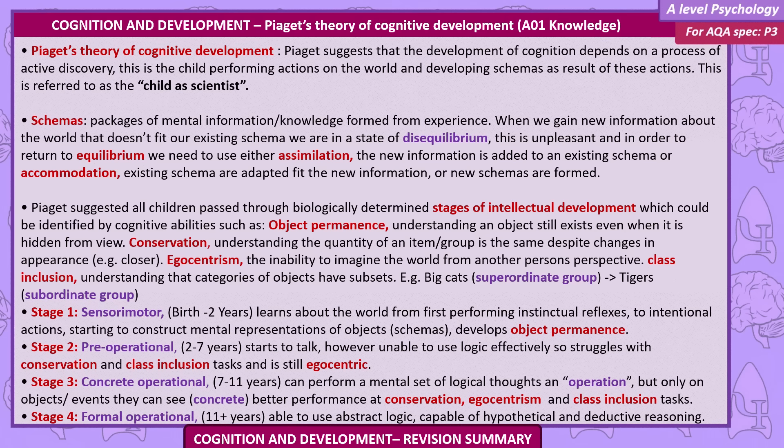When we gain new information about the world that doesn't fit our existing schema, we're in a state of disequilibrium. This is unpleasant, and in order to return to equilibrium, we need to use either assimilation — where the new information is added to an existing schema — or accommodation, where existing schemas are adapted to fit the new information, or new schemas are formed.